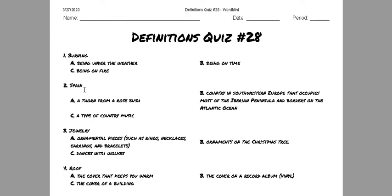Number two, Spain. Is it a thorn from a rose bush? Is it a country in southwestern Europe that occupies most of the Iberian peninsula and borders on the Atlantic Ocean? Or is it a type of country music? A, B, or C?